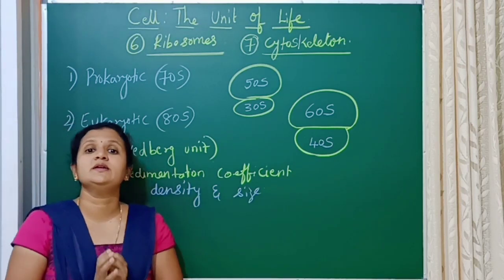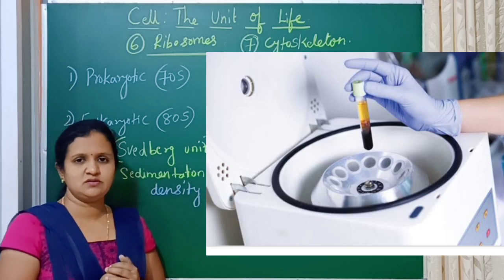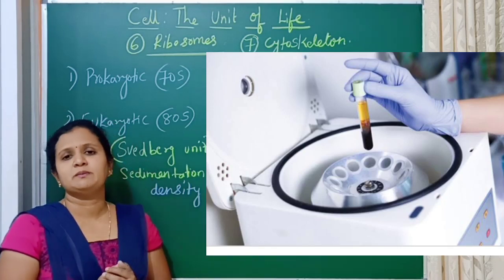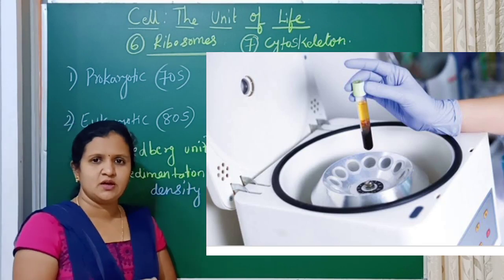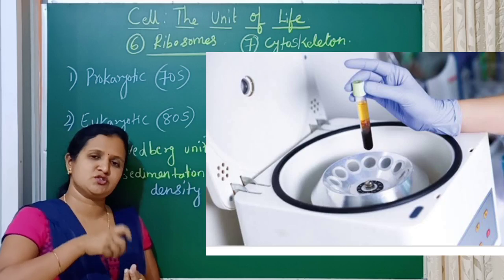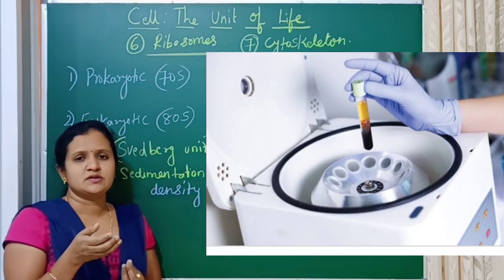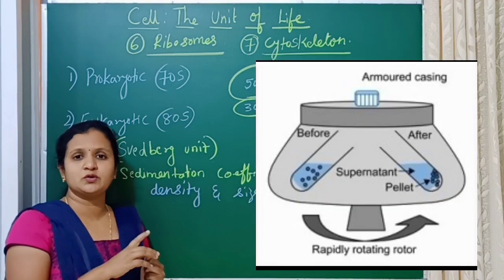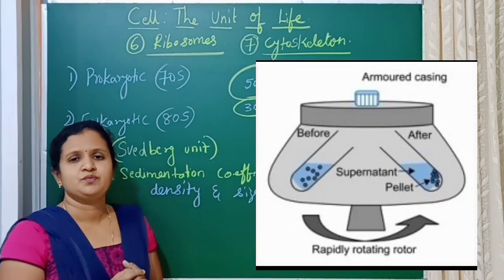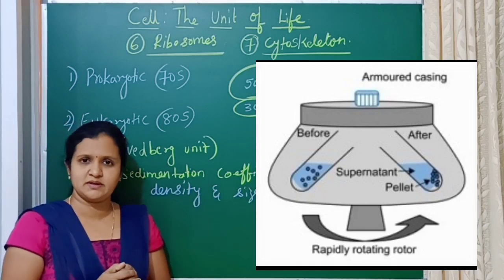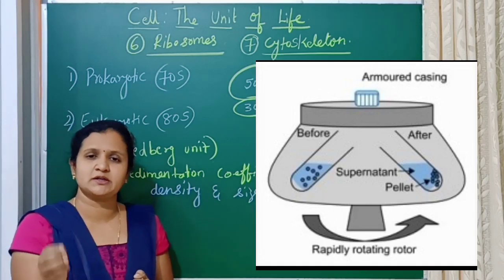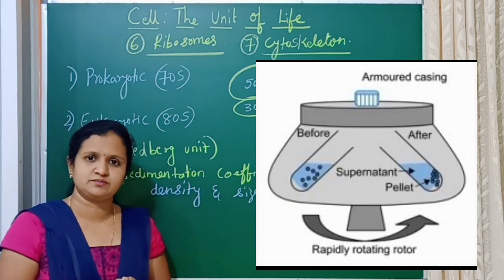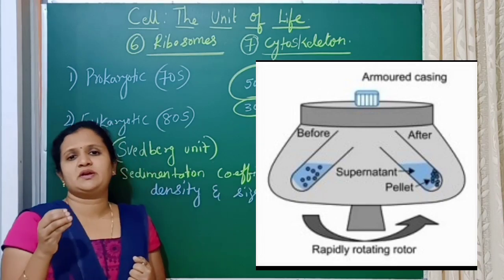In that case, we can use a technique called centrifugation. A centrifuge machine is used for this. You take the cell suspension and place it in the centrifuge, then rotate it at very high speed. When you rotate the centrifuge at very high speed, the smaller particles sediment and get separated. This technique is called centrifugation and it is used to separate cellular components.